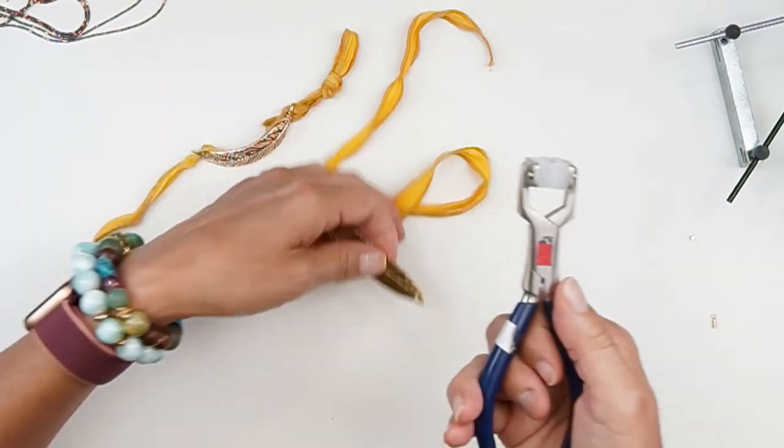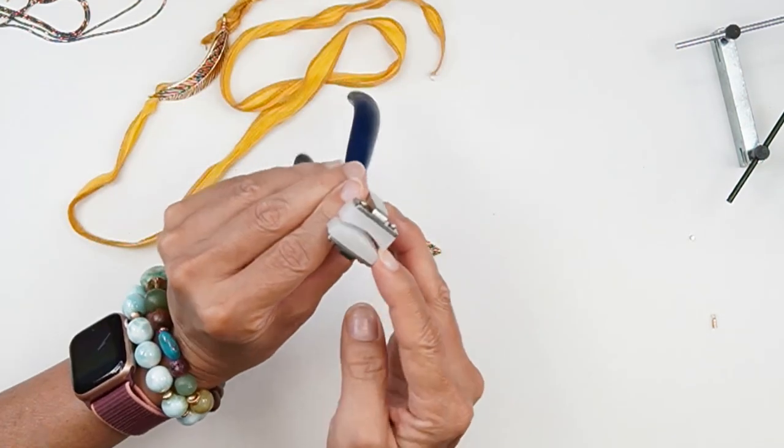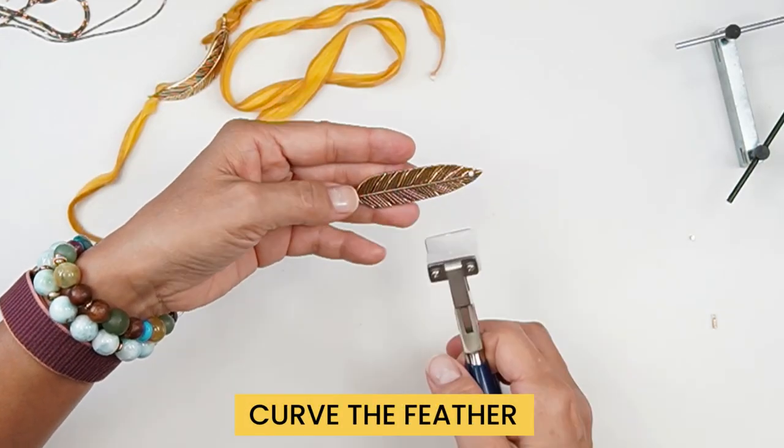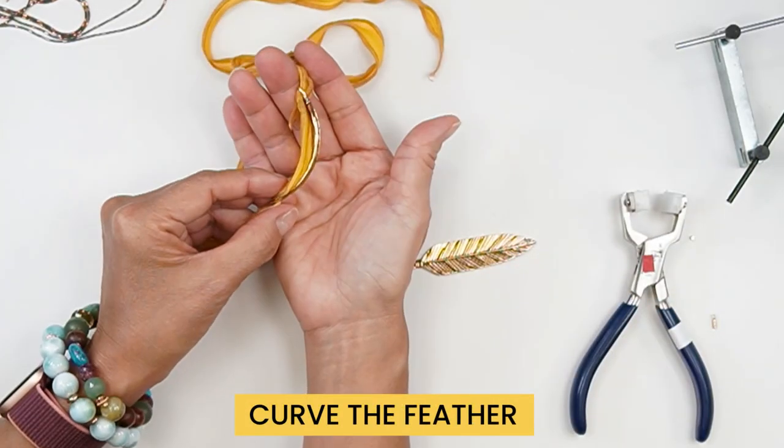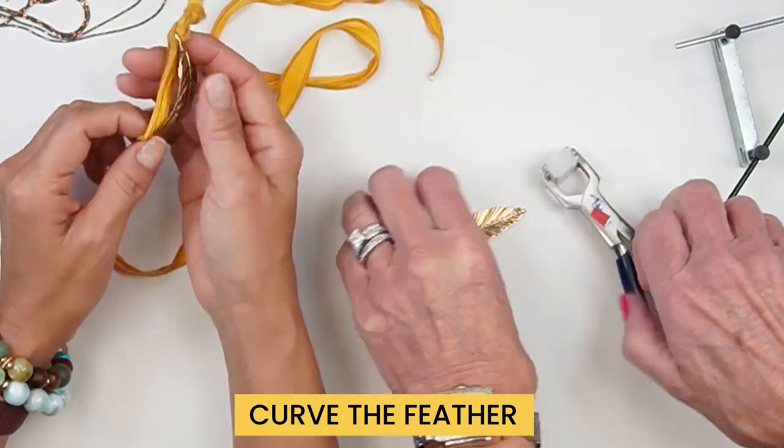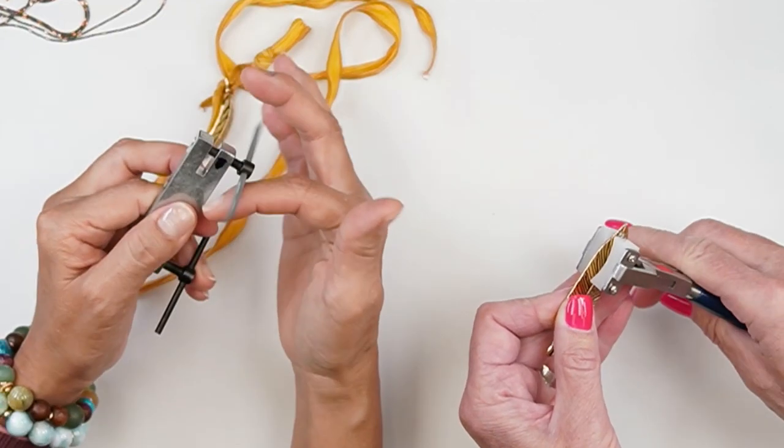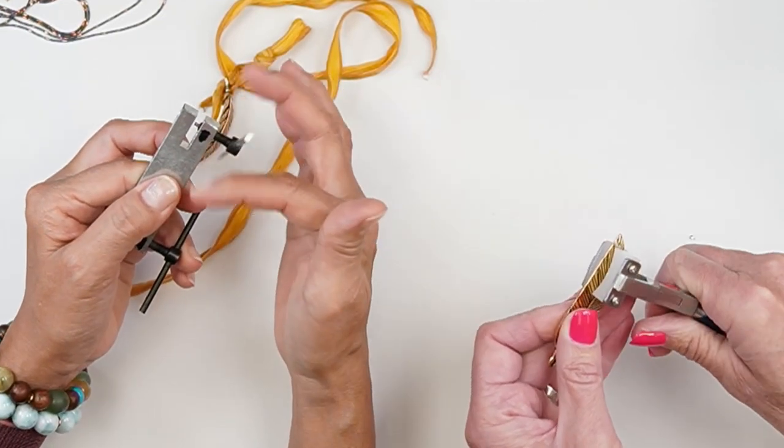This is a nylon plier - you see how it's curved? You're going to take this and squeeze your feather so it curves like mine. I just punched a hole with the twist punch - super easy. You just keep turning it and turning it, and this piece right here in the middle punctures the metal and makes a hole.